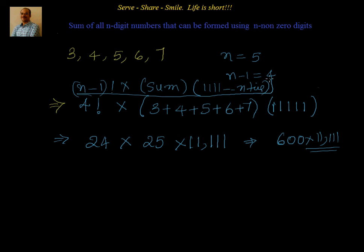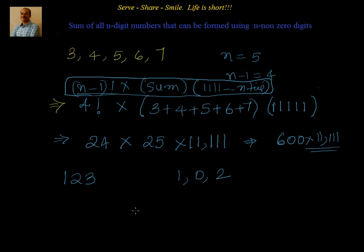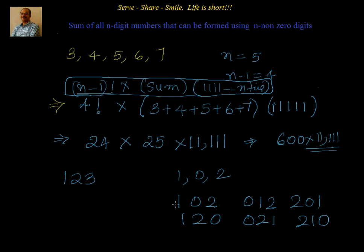So the formula is (n minus 1) factorial, multiplied by the sum of all the digits, multiplied by 1111... n times — based on the value of n. That is how we can find the sum of all n digit numbers. This works only when there is no zero in the digits and there is no repetition. If there is a zero it becomes a little complicated — for example, if the digits given are 1, 0, 2, some of the arrangements like 012 or 021 become 2-digit numbers. We need to subtract those cases, and we will see that logic in the next session.